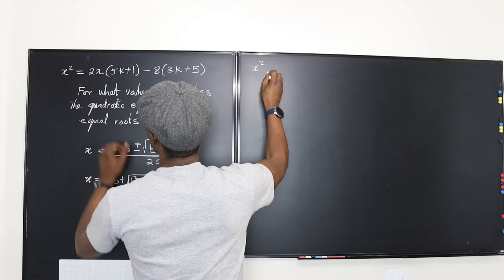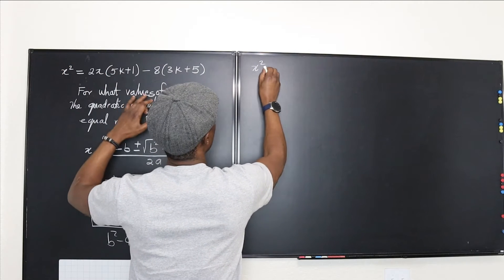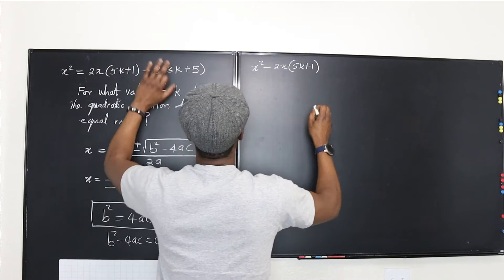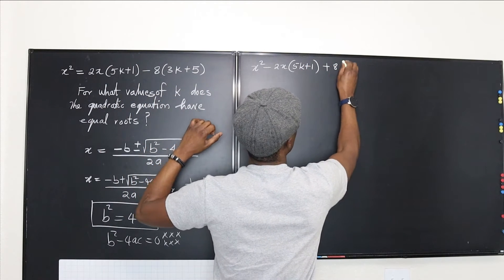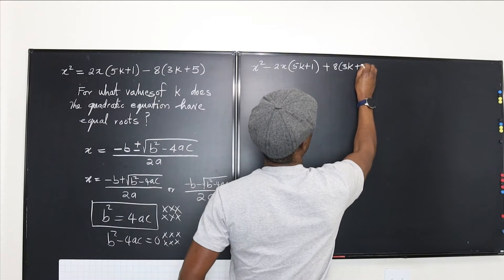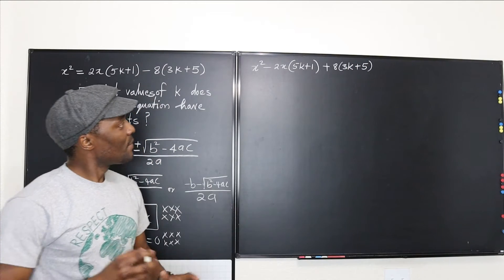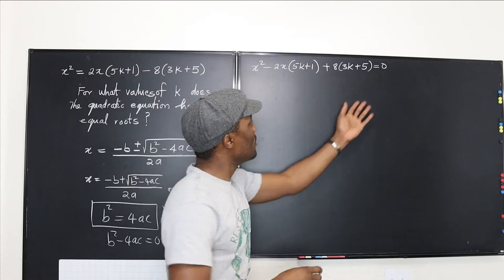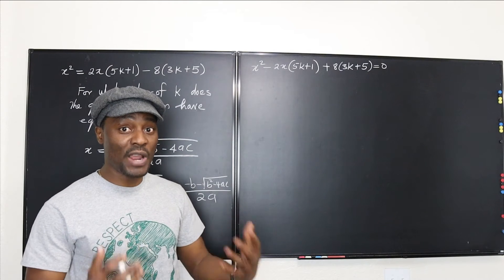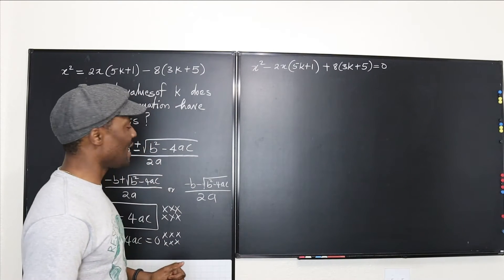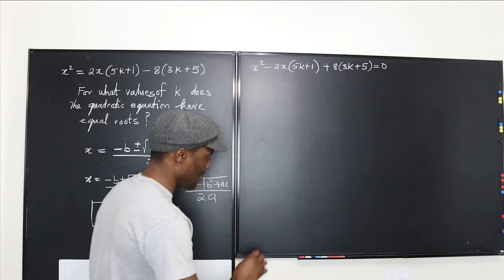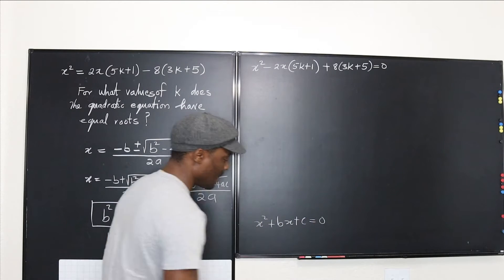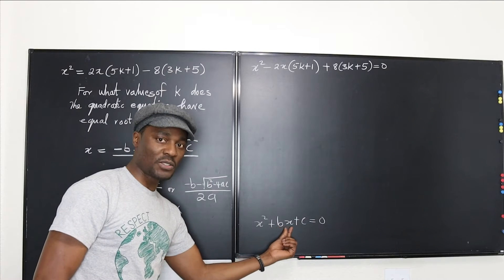We're going to have x squared. If we move everything to this side, we're going to have minus 2x times (5k + 1), and this over here will become plus 8 times (3k + 5), all equals zero. So we moved everything to the left-hand side. The standard quadratic equation has the form x squared + bx + c = 0.